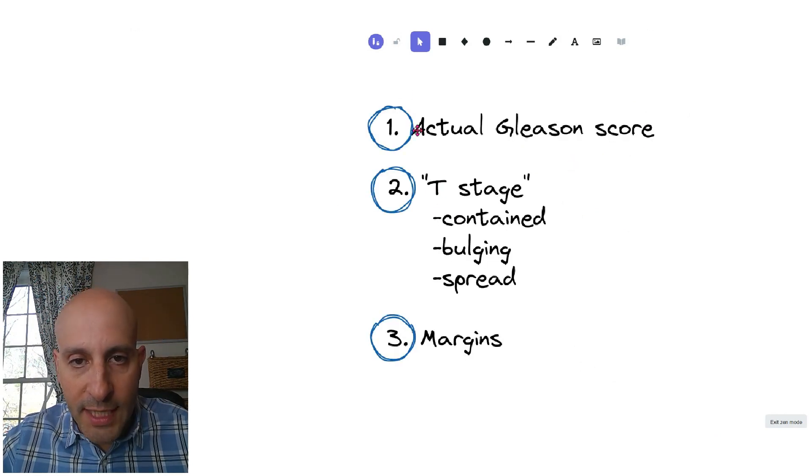So, to review so far, we're going to find out what the actual Gleason score is, what the T stage is, is it contained, bulging, or spread? And then we're going to find out what the margins are.